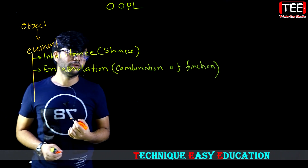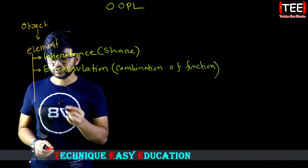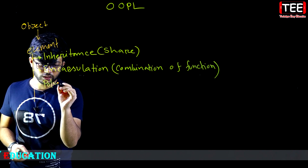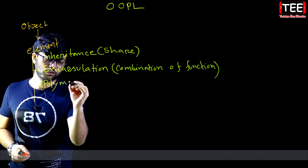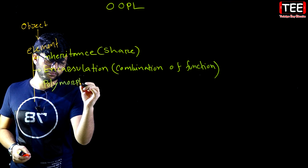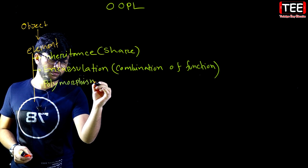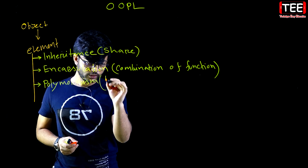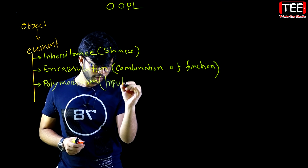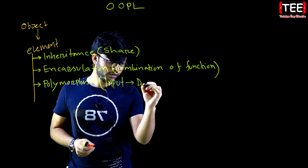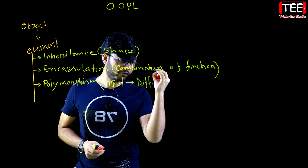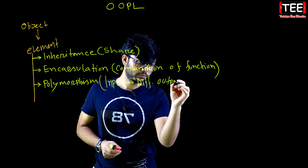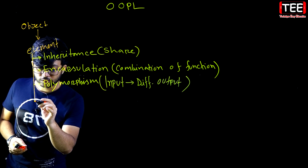Polymorphism — polymorphism means that with different input you get different output. Different input can produce different output.